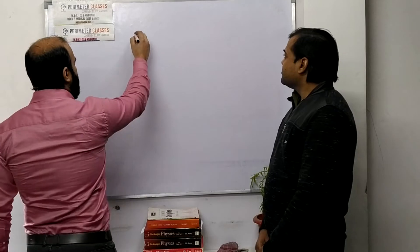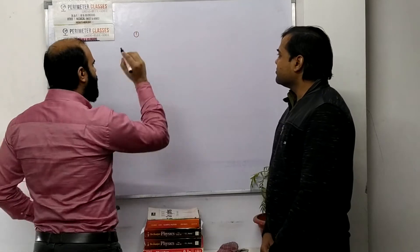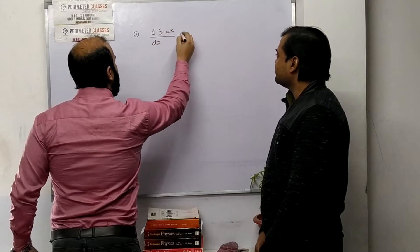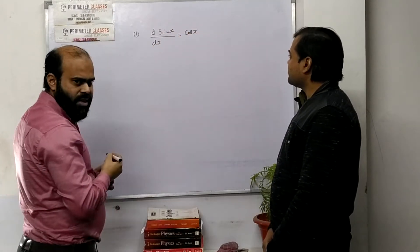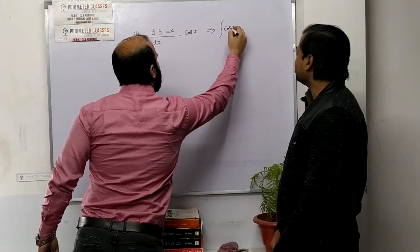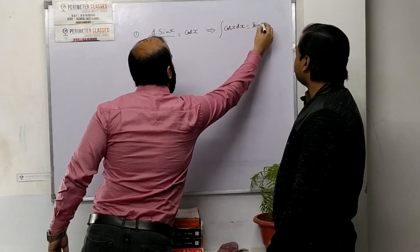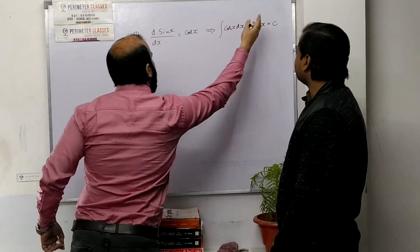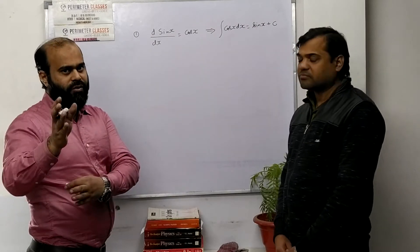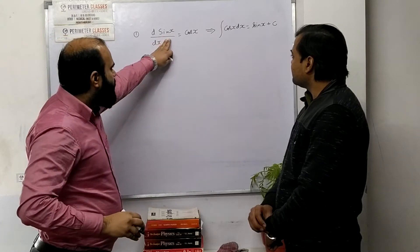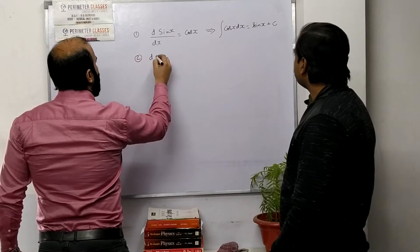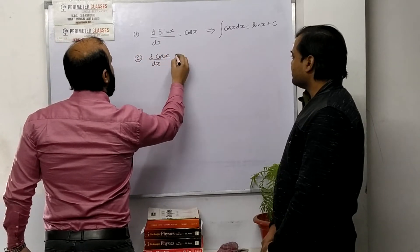First, do you remember the differentiation of sin x? It is cos x. So we can say that the integration of cos x is sin x plus a constant of integration, which we already studied when we were doing indefinite integration. So: differentiation gives cos x, and integration of cos x gives sin x + C.